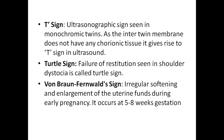Turtle sign refers to failure of restitution seen in shoulder dystocia. Von Braunfels sign refers to irregular softening and enlargement of the uterine fundus during early pregnancy, occurring around 5 to 8 weeks of gestation.